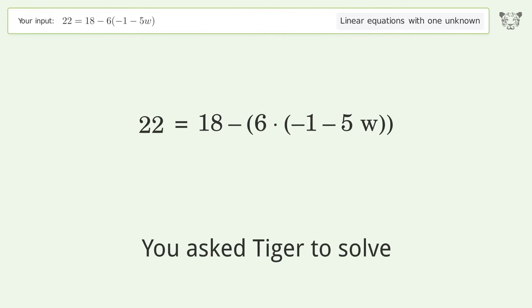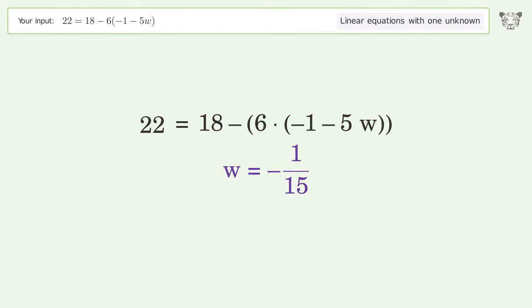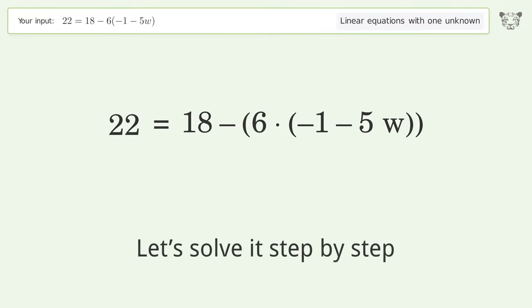You asked to solve this linear equation with one unknown. The final result is w equals negative 1 over 15. Let's solve it step by step.